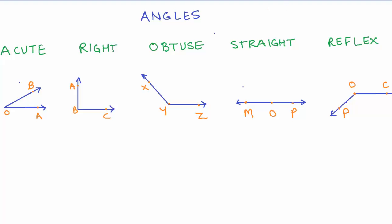In this video we are going to learn the different types of angles that are classified based on their measure. The first angle we are going to study is known as an acute angle. Angle AOB measures less than 90 degrees. All angles that are more than zero degrees but less than 90 degrees are acute angles.